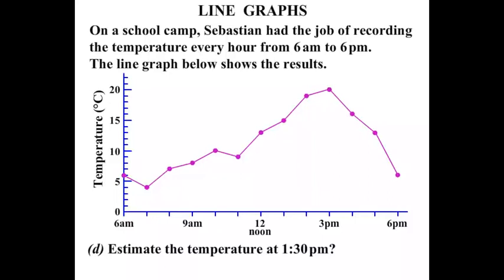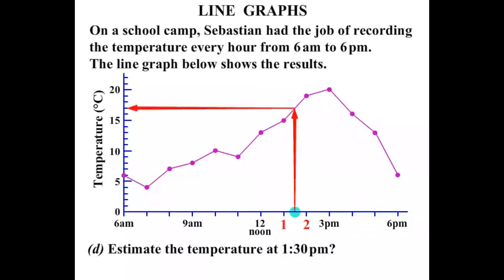Next: estimate the temperature at 1:30pm. 12 noon is here, then 1pm, then 2pm — so 1:30pm is right in the middle. We're estimating because Sebastian didn't measure exactly at 1:30pm, but we can estimate using the graph. Reading straight up and then straight across, from the scale we can see 17. So the estimate is 17 degrees Celsius.